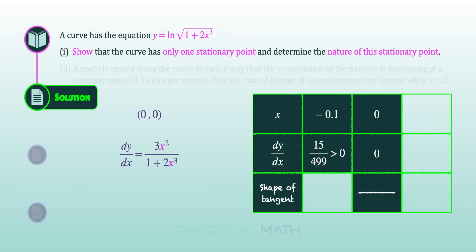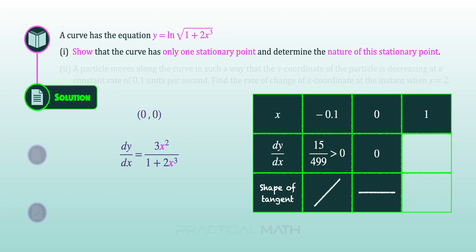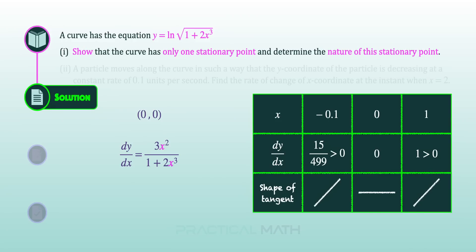For positive gradients, the shape of the tangent is upward sloping. Using a point to the right of the stationary value, when x = 1, substituting into our derivative function gives dy/dx = 1, which is also positive. So the tangent is again upward sloping. With these results, we conclude that the nature of the stationary point (0, 0) is a stationary point of inflection.